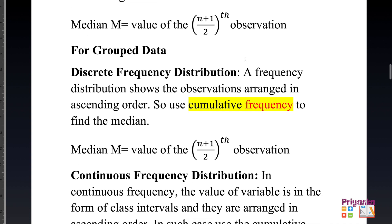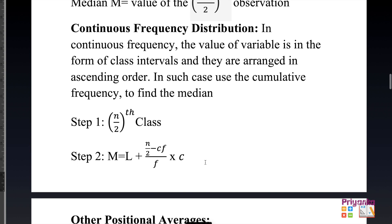The formula for raw data and discrete frequency distribution are the same — both use (n+1)/2. For continuous frequency distribution, the value of the variable is in the form of class intervals, either exclusive or inclusive, arranged in ascending order. In such cases, use cumulative frequency to find the median.